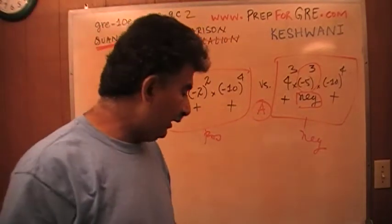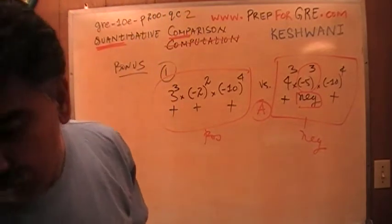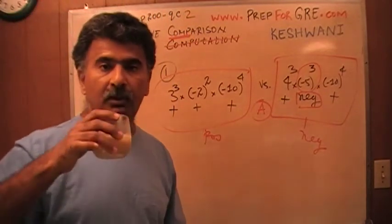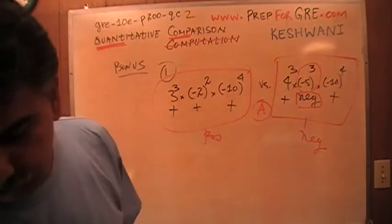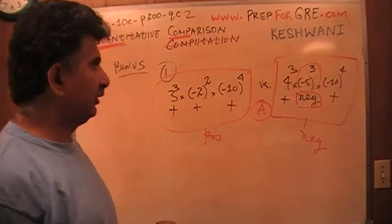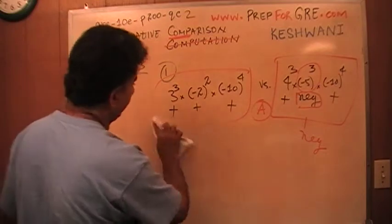What the quantities actually are, we do not care because we are not asked to compute the quantity. This is not called quantitative computation. This is called quantitative comparison. So when you see something like this in the exam, that's what you have to realize. Let me check the time one more time in the clock. If I have the time, I'll do one more.